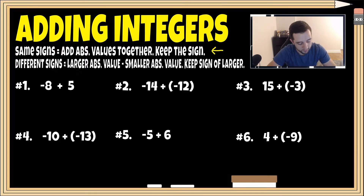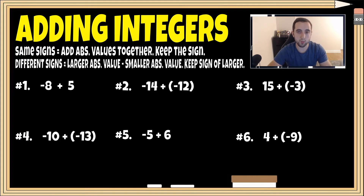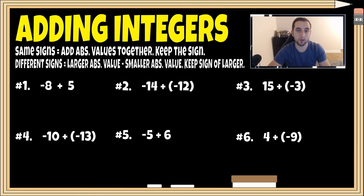So let's go ahead and jump right into a couple problems. Adding integers — if you're learning this for the very first time, it can be somewhat challenging trying to add a positive and a negative number or two negative numbers. Just with practice and getting used to it, over time it's gonna become super easy and second nature to you. So stay focused, you can do it.